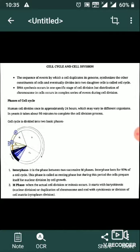Cell Cycle and Cell Division. The sequence of events by which a cell duplicates its genome, synthesizes the other constituents of the cell, and eventually divides into two daughter cells is called the cell cycle. DNA synthesis occurs in one specific stage of cell division, but distribution of chromosomes in cells occurs in a complex series of events during cell division.